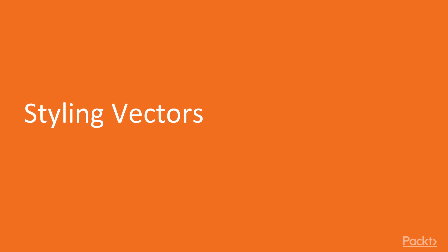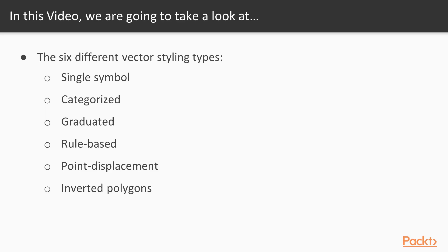Now we move on to the first video of this section that deals with Styling Vector Data. In this video, we are going to learn about the six different vector styling types. The six types are Single Symbol, Categorized, Graduated, Rule Based, Point Displacement and Inverted Polygons.